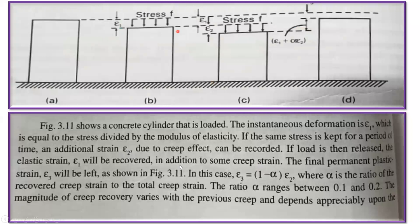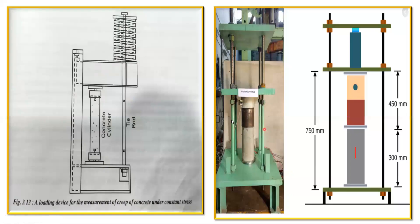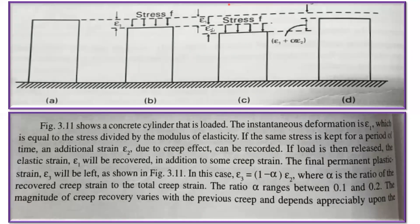To understand this, imagine you've taken a cylinder and you're applying a compressive force on it. Figure 3.11 shows a concrete cylinder that is loaded. The instantaneous deformation is e1, which is equal to stress divided by modulus of elasticity. As soon as the cylinder is loaded, it deforms — a small deformation denoted by e1 occurs.